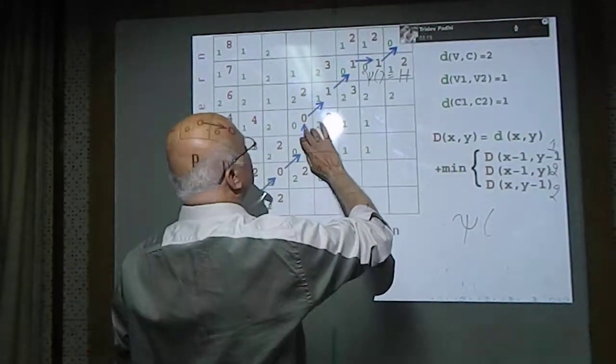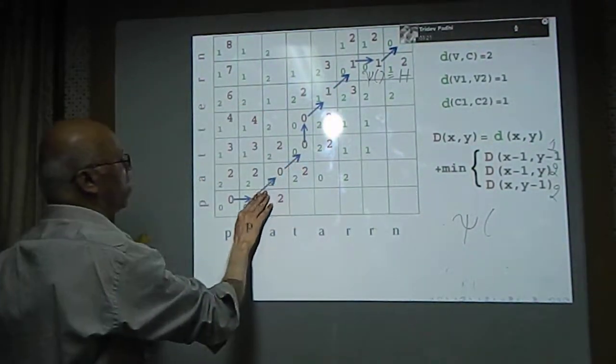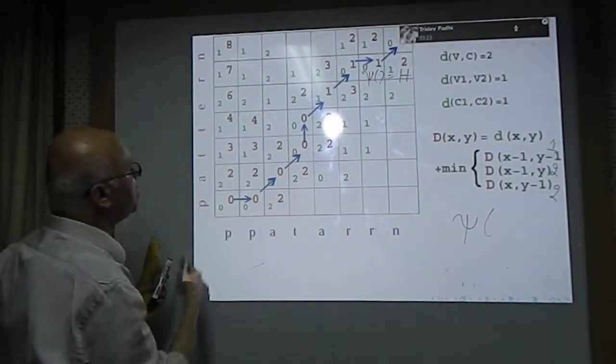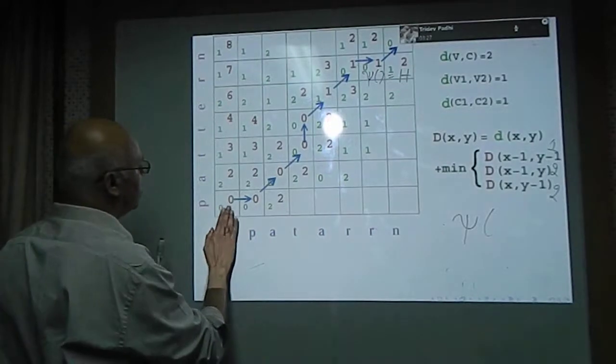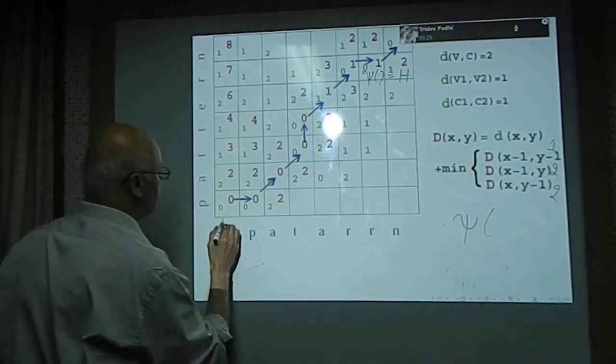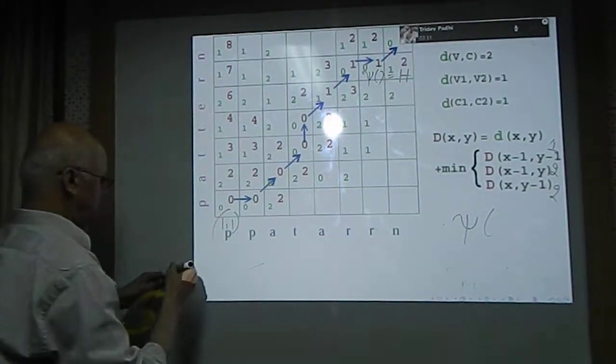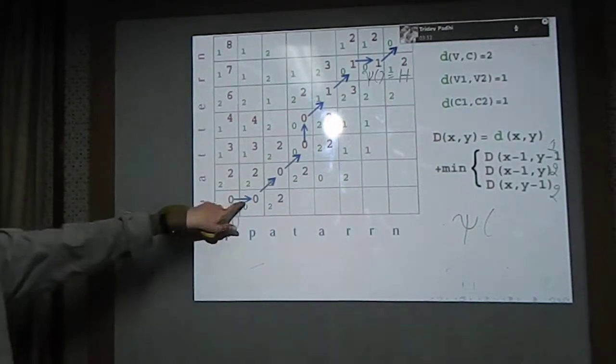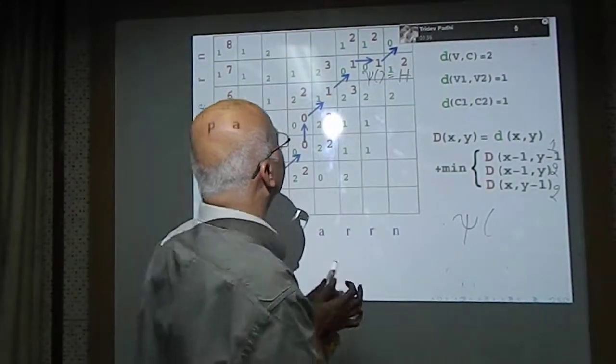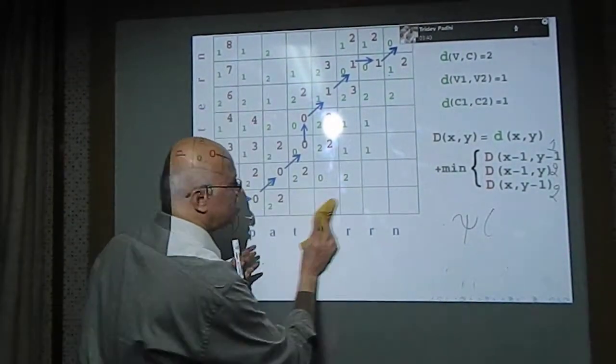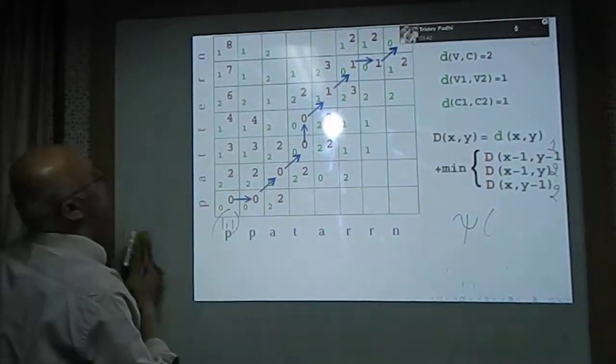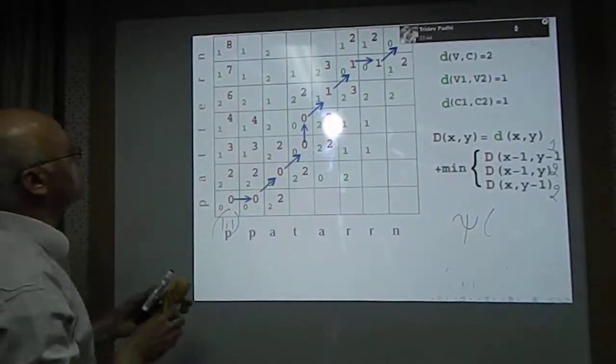Similarly, we can compute and plot these blue arrows showing how we came from the previous cells until we reach the final cell point. The sequence of blue arrows indicates the optimal path or the optimal alignment of the misspelled word pattern with the correct spelling of the word pattern.